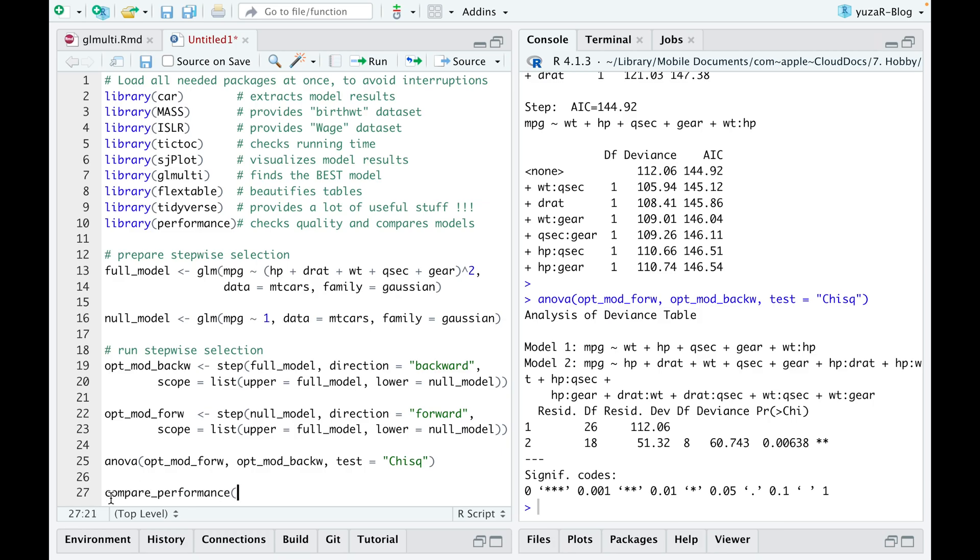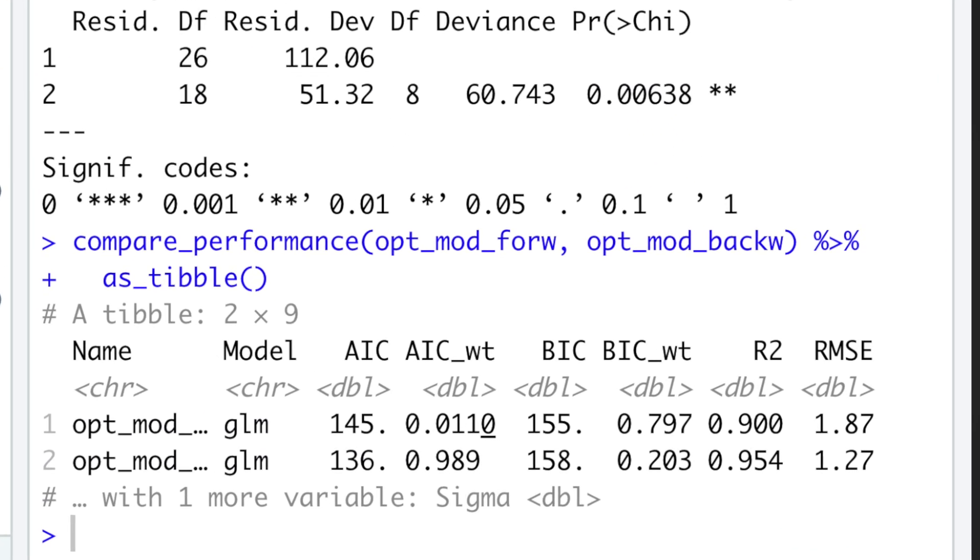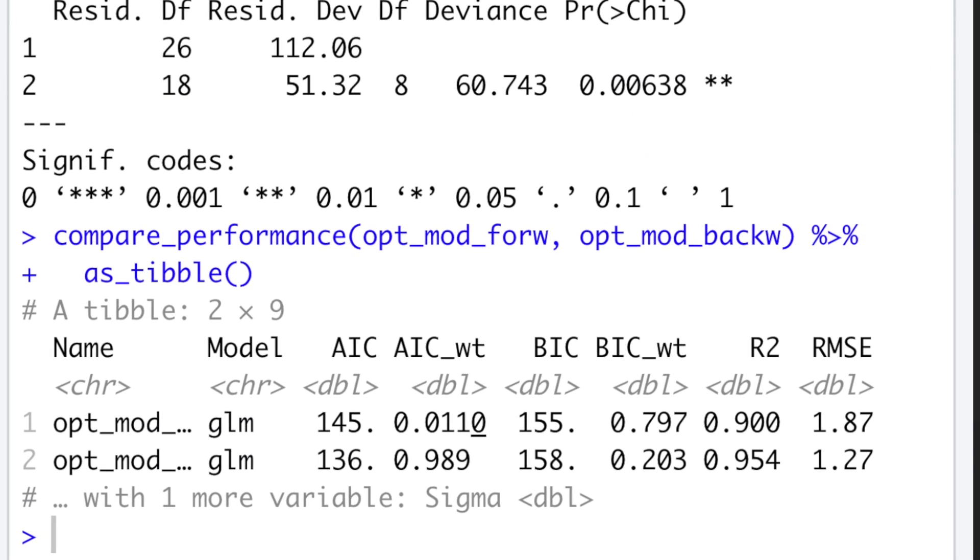glmulti then compares the amount of useful information models provide. Such model comparison is done with the help of information criteria. For example, AIC information criteria or Bayesian information criteria.